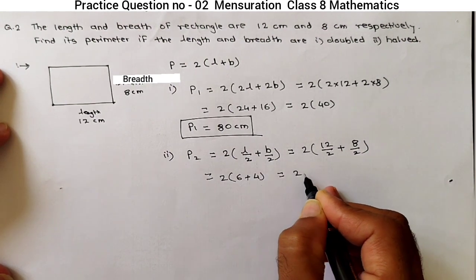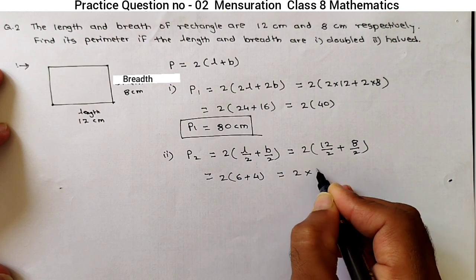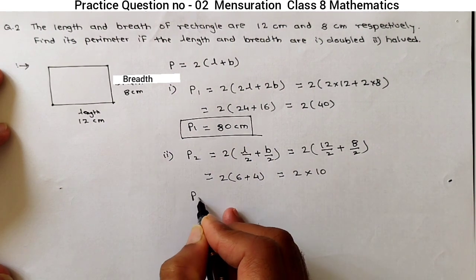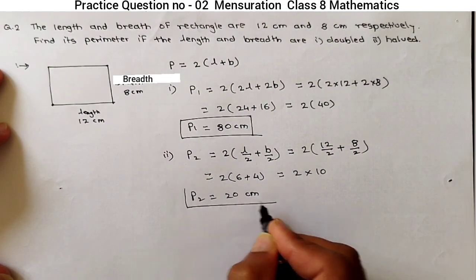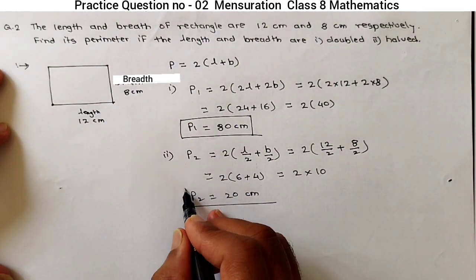So, it will become 2 into bracket 6 plus 4 is 10. So our answer P2 is equal to 20 cm. Unit is cm because length and breadth are given in cm.